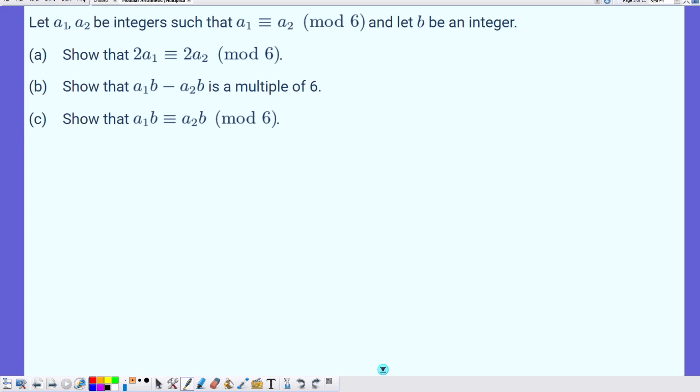As we always do, let's start with information the problem already gives us. Namely that A1 is congruent to A2 mod 6. And as we know, this implies that the difference between the two, A1 minus A2, is a multiple of 6 times some integer which I'll call K. This comes from the definition of modulo congruence.